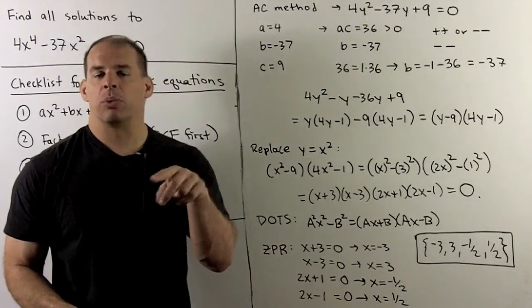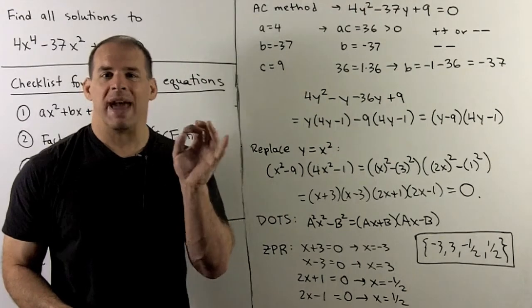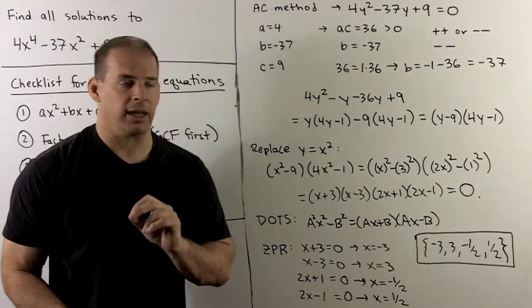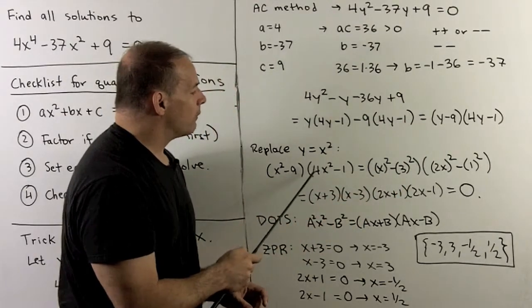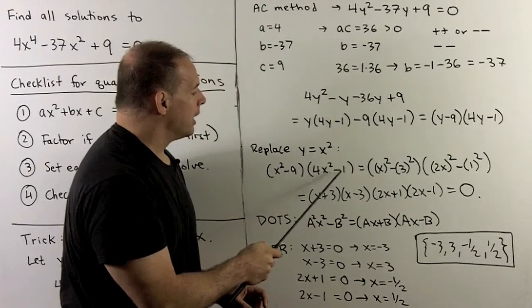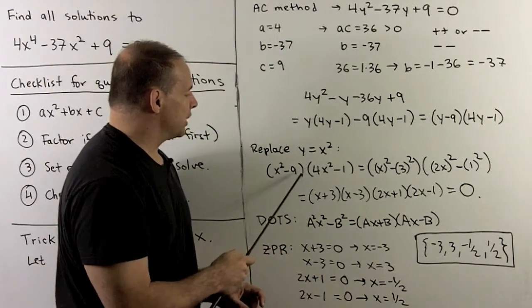Now, we don't want to apply the zero product rule yet. What I want to do now is put the x squareds back in. So, our equation becomes now: x squared minus 9, 4x squared minus 1. And you'll note, these are both differences of two squares.